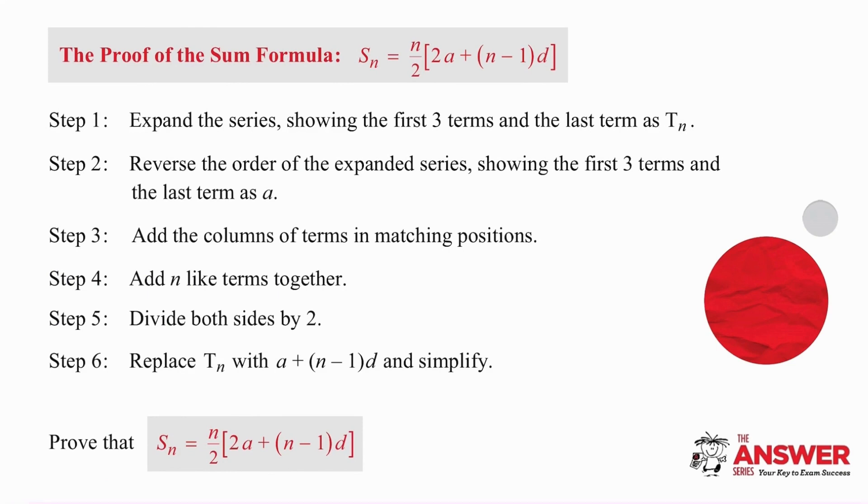There are six steps which might be alarming, but it does mean that you know exactly what you're doing if you know your steps. So step one, expand the series. That means write it out in full. Step two, reverse the order of that expanded series and write it down again. Step three, add the columns of the terms in matching positions. I'll explain this to you in a minute. Step four, add all the like terms together. Step five, divide both sides by 2. And then finally, step six, replace T_N with A plus N minus 1D.